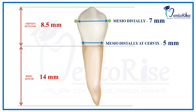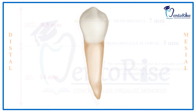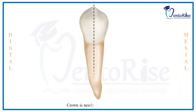This means the cervix of the mandibular 1st premolar crown is narrow mesodistally when compared with the crown width at the contact areas. The crown is also nearly symmetrical bilaterally from the buccal aspect.